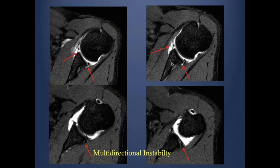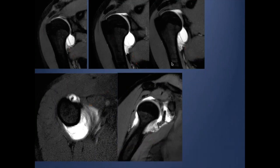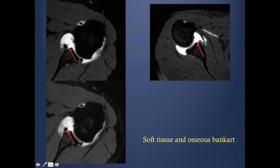With anterior instability, there is an evolving imaging technique to match surgical demands. Surgeons now require assessment of how much bony loss exists on either the humeral side or the glenoid side. This leads to the concept of off-track versus on-track lesions, which determines whether a standard repair will yield a sufficiently stable joint.